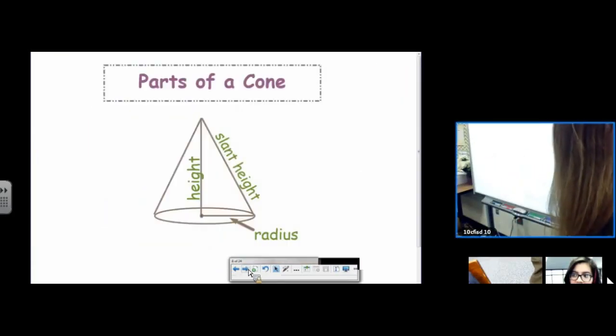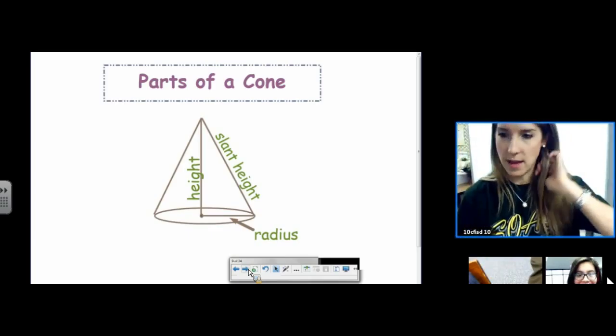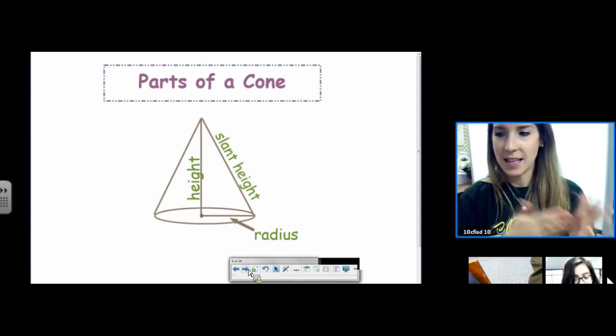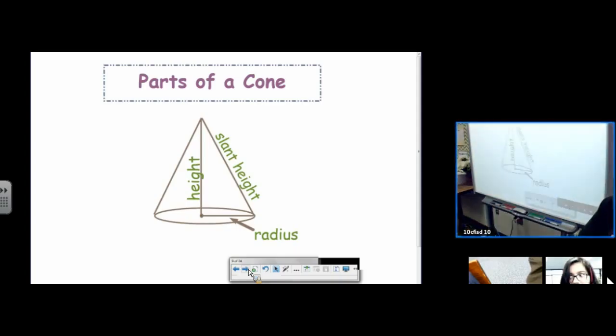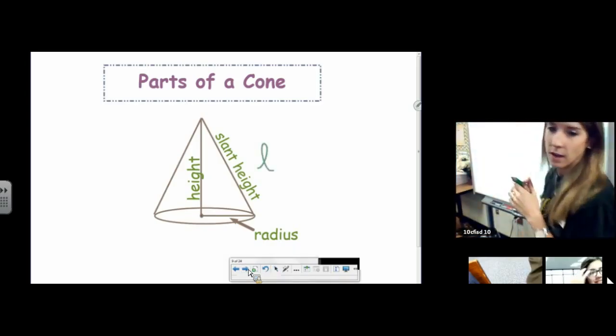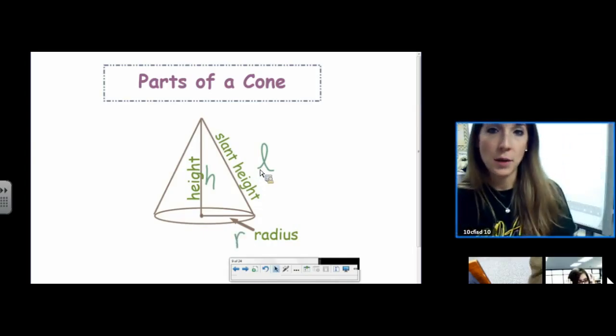All right, so on this one, a cone, of course, is a lot like a pyramid. Pyramids have heights and slant heights. Cones also have heights and slant heights. What was the variable that we used for slant height? Lowercase cursive L, yep. The height is H, and then the radius is R. So those are the variables that go into a cone: H, R, and L.